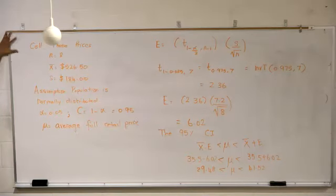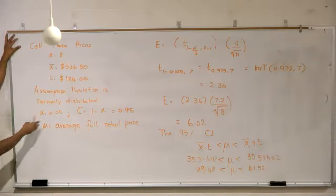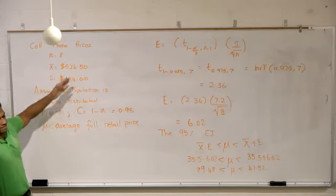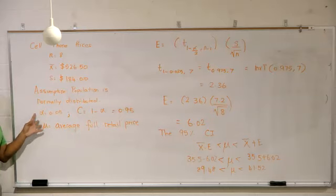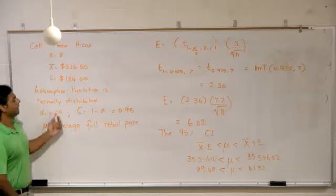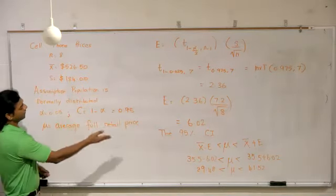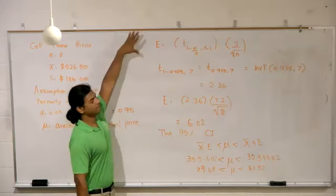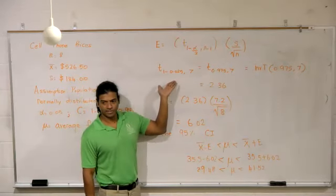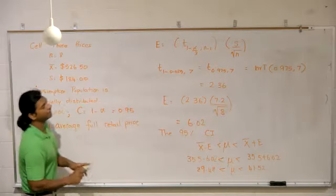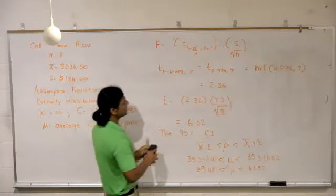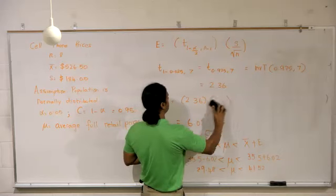What does this mean? If I collected batches of eight people, maybe looked at different samples, 95% of the samples would result in an average commute time that would fall between those two values. Based on this interval, would it be unusual for an employee to say it takes 60 minutes to get to work? Yes, that would be unusual.